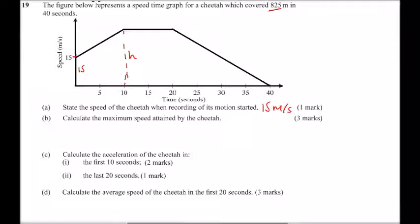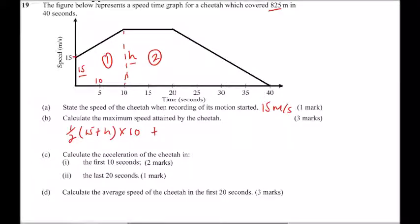We set up the area equation using two trapeziums. For the first trapezium: area equals one-half times (15 plus h) times 10. For the second trapezium: the base runs from 10 to 30 — a width of 20 — so area equals one-half times (h plus 10) times 30, since we subtract the 10. The sum of both areas equals the total distance covered by the cheetah, which is 825.